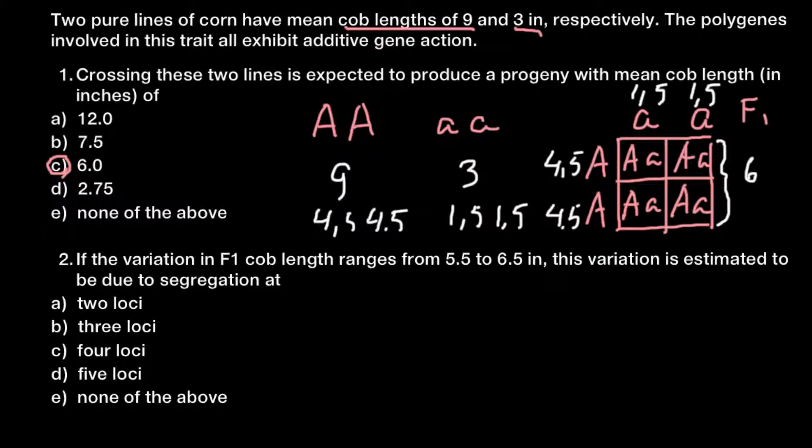Imagine that this trait is under control not of one gene with two alleles, one dominant and another recessive. Imagine that we have two variants, that one could be capital A, capital A, capital B, capital B. And we have to cross with small a, small a, and small b, small b. Once again, this genotype would be 9 inches and this would be 3 inches.